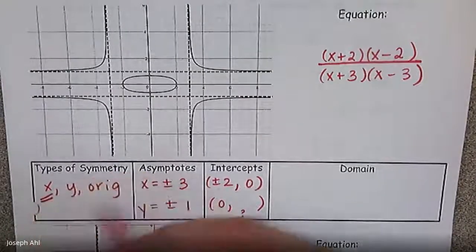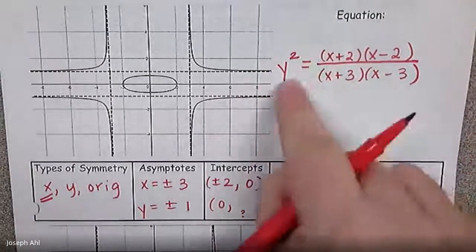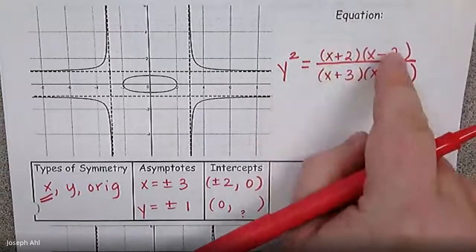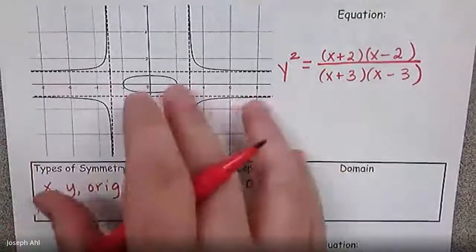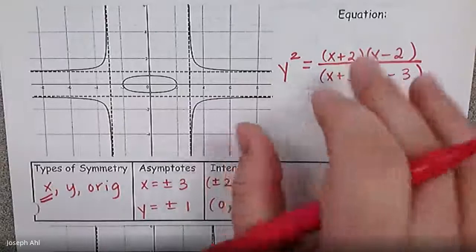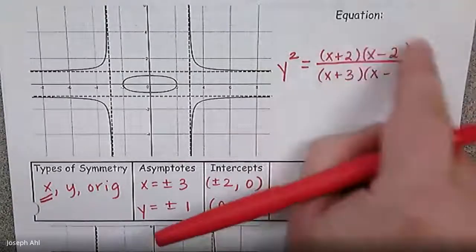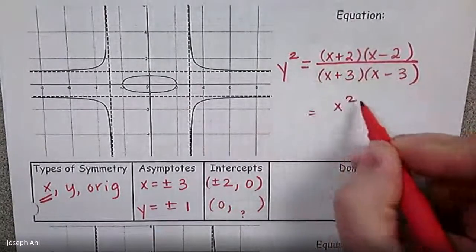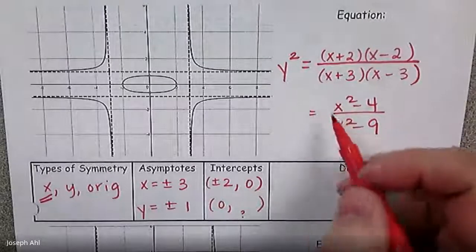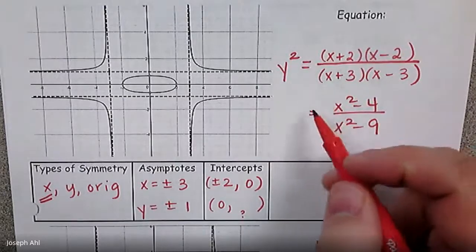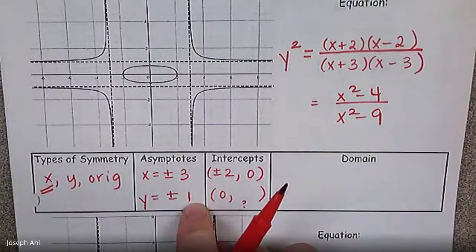Because specifically we have x-axis symmetry, this is a y-squared equation. So this is probably the easiest way of writing it: y squared equals x plus 2 times x minus 2 over x plus 3 times x minus 3. And that actually fits — this equation would make all of the key features of the sketch true. If you multiply it out, you get x squared minus 4 on top and x squared minus 9 on the bottom. Because of the equal heaviness of the lead coefficients, it gives you plus or minus 1, matching the horizontal asymptotes.